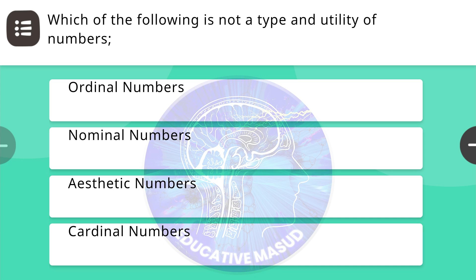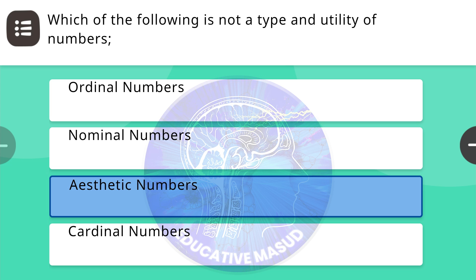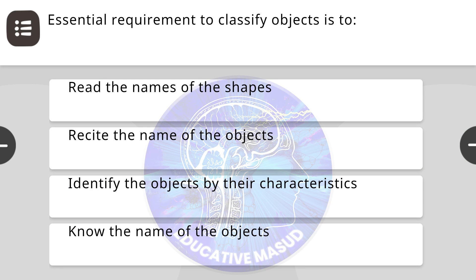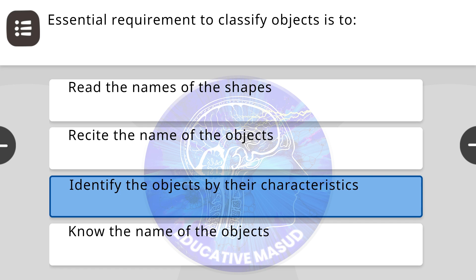First question of NISTA 4.0 Affluent Module 9: which of the following is not a type and utility of numbers? Correct answer is aesthetic numbers. Next question: the essential requirement to classify an object is? Correct answer is identify the objects by their characteristics.